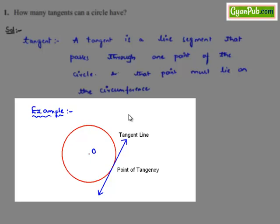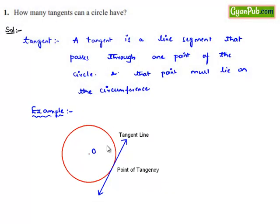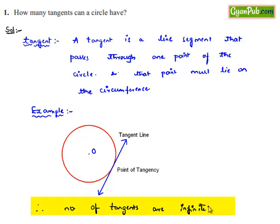As there are a number of points that lie on the circumference of the circle, we can say every line segment passing through those points individually is a tangent of the circle. Therefore, we can say the number of tangents to any circle are infinite, as there exist infinite number of points on the circumference of the circle.